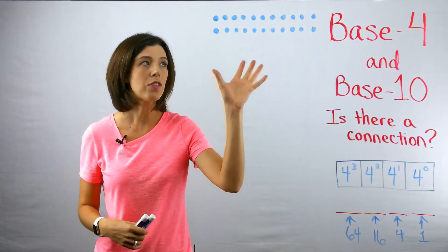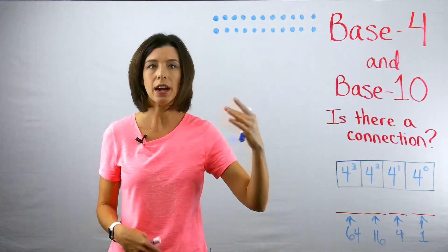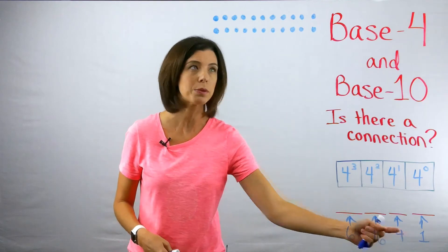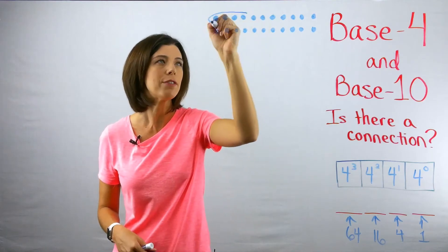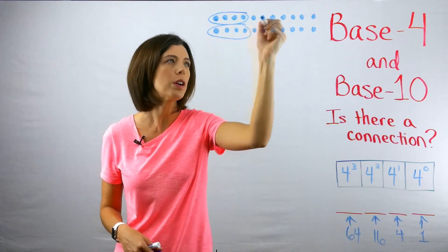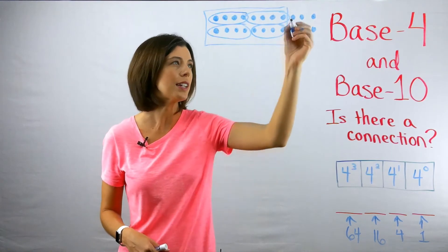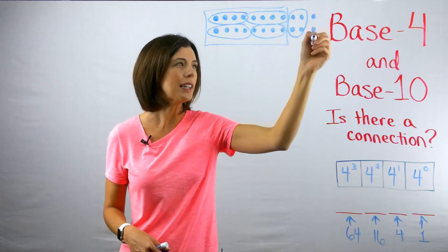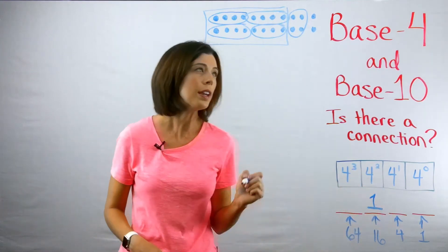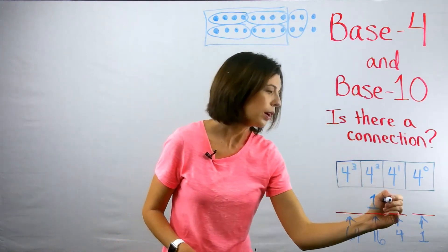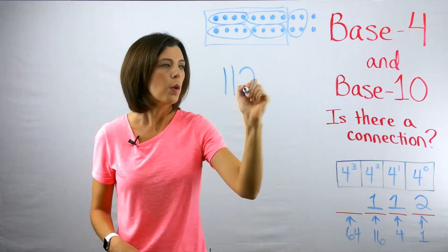Now I have this new amount of dots. I can make groups of four, and I even notice I can make a group of 16. Starting by fours: four, four, four, four — that gives me a group of 16. Then I've got another four and two ones. So I have one group of 16, one group of four, and two ones. This number is written as 112 base four.